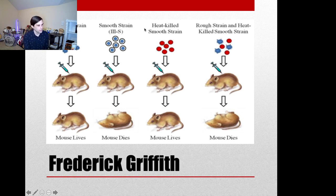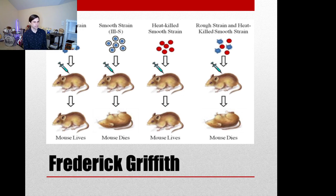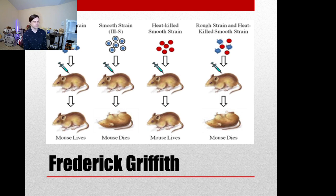So Griffith did something clever. He took the smooth strain and heated it until the bacteria died, but without boiling or lysing the cells — so their capsules were left intact. He called this the heat-killed strain and injected it into a mouse. Since nothing was living, the immune system broke down those capsules and destroyed them. An autopsy on that mouse showed nothing inside, which was not unexpected.